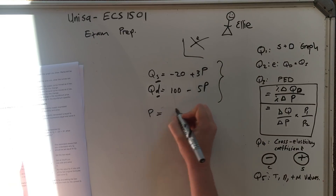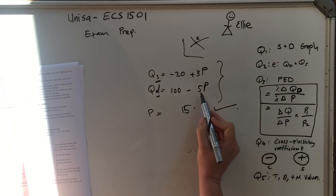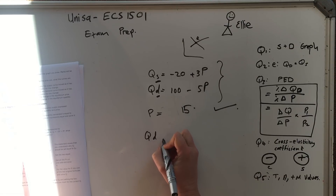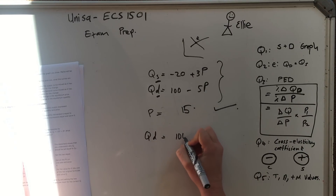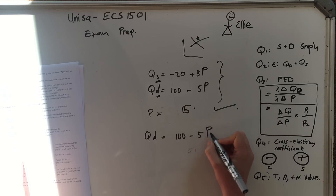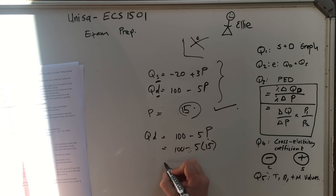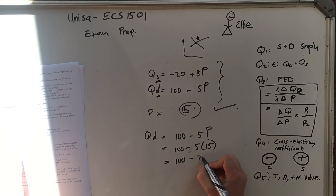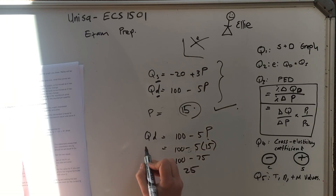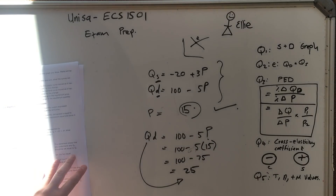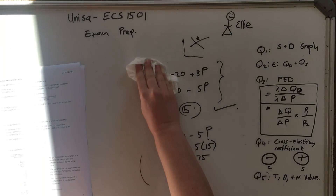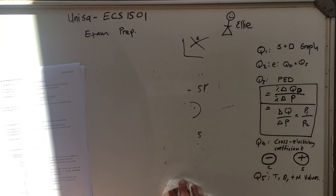So P equals 120 divided by 8. Using your calculator: 120 divided by 8 equals 15. So your price equals 15. Then substitute the price back in: QD equals 100 minus 5 times 15, which equals 100 minus 75, which equals 25. So your equilibrium quantity is 25. Fantastic — easy marks.